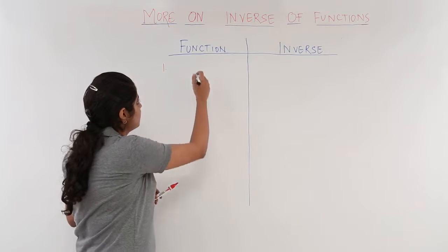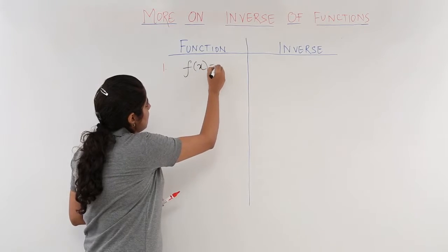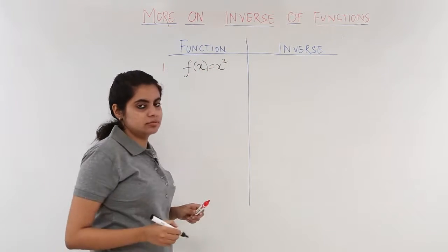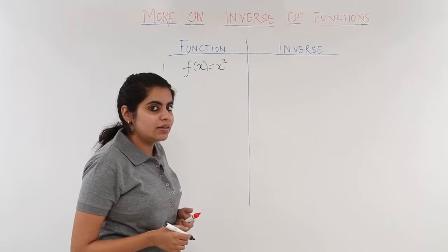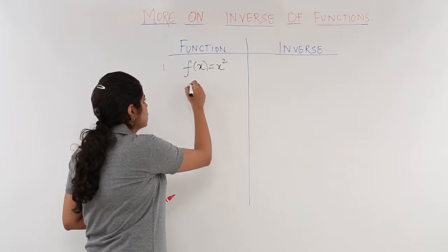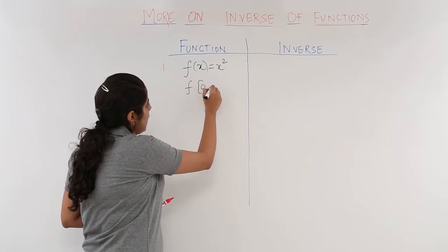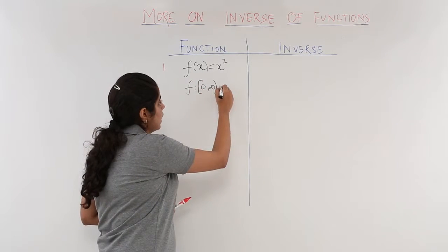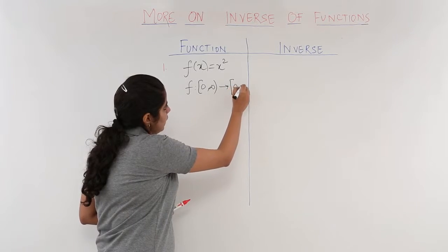Suppose the first function given is f(x) = x². The domain and range of this function are both 0 to infinity.